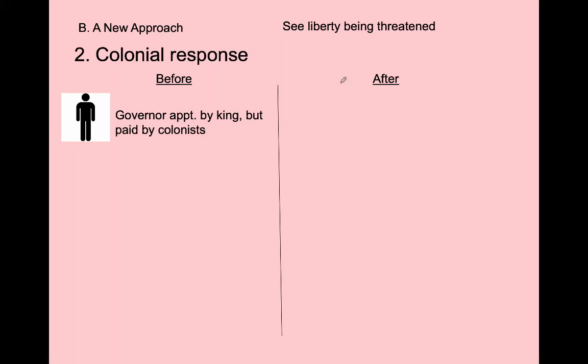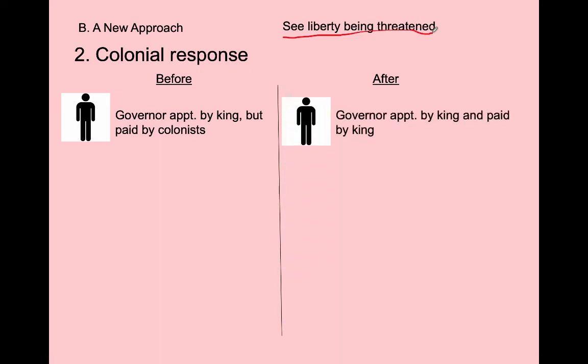Even though Townshend didn't think this would cause a stir, colonists see it as a cumulative threat to their liberty and Enlightenment rights—representation with taxation, trial by jury, and freedom. Looking at the executive branch: before salutary neglect ended, the governor was appointed by the king but paid by the colonists, a nice check and balance. Now the governor is appointed and paid by the king, so the colonists have completely lost control of their executive branch of government.